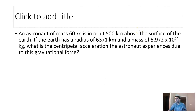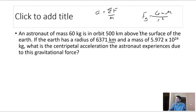An astronaut of mass 60 kg is in orbit 500 km above the surface of the Earth. The Earth has a radius of 6,271 km and a mass of 5.972 × 10²⁴ kg. What is the centripetal acceleration due to gravitational force? Acceleration equals net force divided by mass. The force here is gravity, so we use the gravitational force equation and then divide by mass. Distance must be in meters — multiply kilometers by 1,000.